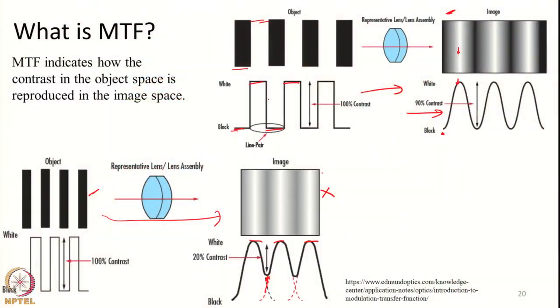If the contrast is maintained properly — if the black and white tones in the object space are maintained exactly as black and white in the image — that is ideal. But all sensor elements come with their own limitations, and the grey tones are not reproduced properly in the image space. This determines the MTF. As the MTF goes lower, our ability to identify objects also depends on the MTF of a system.